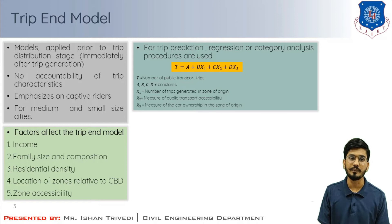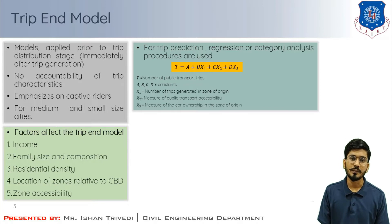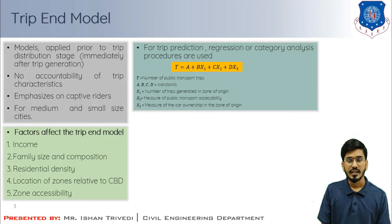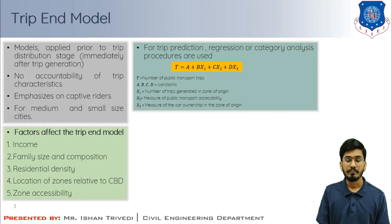Accessibility is used to describe the ease with which people in a given zone use a particular form of transport, and it completely relies on land use and available transport. For example, a zone with high accessibility is one which is served with good public transport facilities — including frequency of buses, number of buses, how they cater the route, and whether there is a rapid transit route or local bus services.